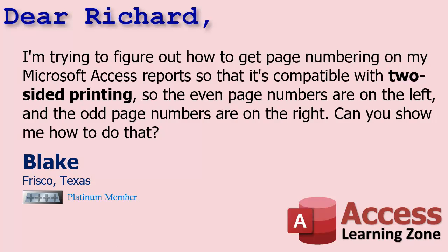Today's question comes from Blake in Frisco, Texas, one of my platinum members. Blake says: I'm trying to figure out how to get page numbering on my Microsoft Access report so that it's compatible with two-sided printing, so the even page numbers are on the left and the odd page numbers are on the right. Can you show me how to do that?